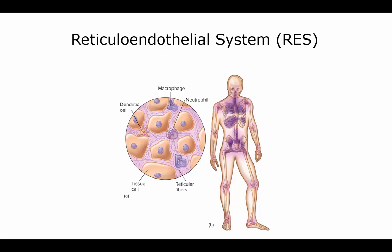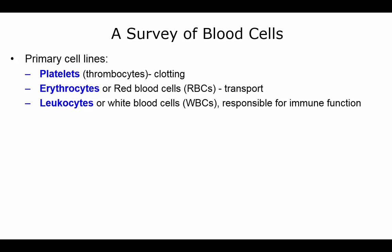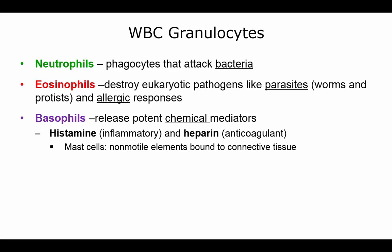The shading on the right shows variations in phagocyte concentrations — around your joints you have more, and in the core of your body you have a lot more phagocytes. The primary cells in your blood include platelets (thrombocytes) involved in clotting, erythrocytes (red blood cells) for transport, and leukocytes (white blood cells) involved in immune function.